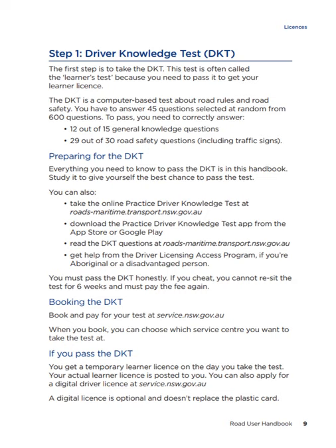Step one: Driver Knowledge Test. The first step is to take the DKT. This test is often called the learner's test because you need to pass it to get your learner licence. The DKT is a computer-based test about road rules and road safety. You have to answer 45 questions selected at random from 600 questions. To pass, you need to correctly answer 12 out of 15 general knowledge questions, and 29 out of 30 road safety questions, including traffic signs.